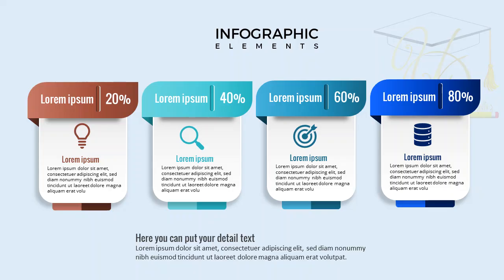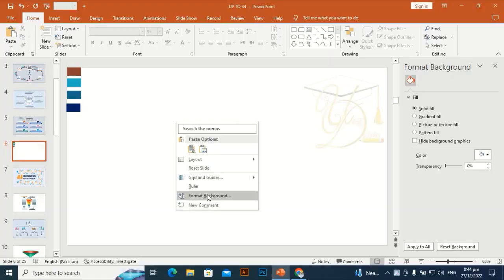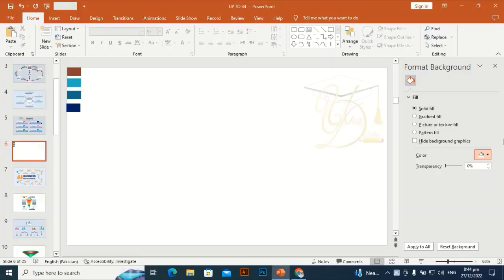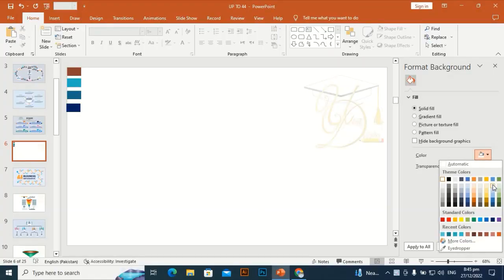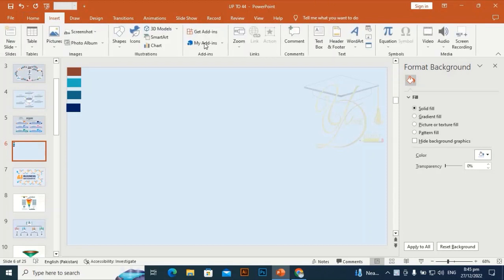In this tutorial I am going to show you how to design a four steps infographic in PowerPoint. The keys I am using during the design you can see at the below bar — follow these keys and watch the video till the end. Go to Format Background and give it a different color.